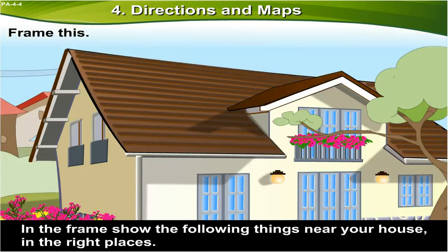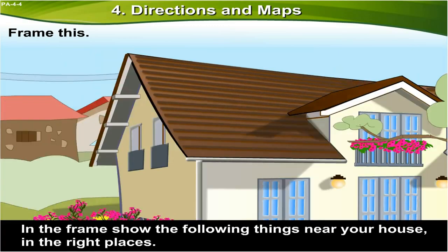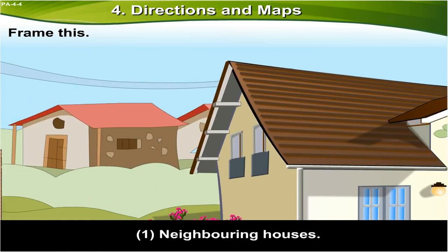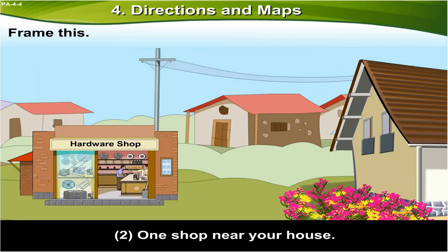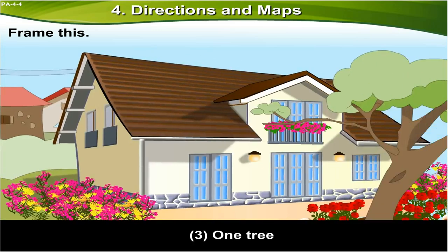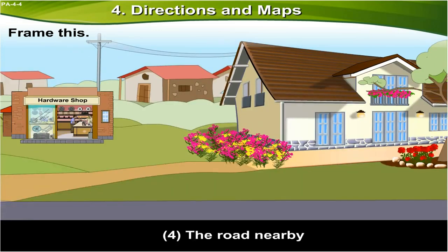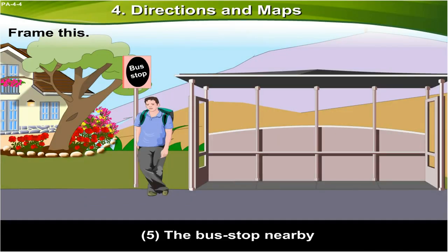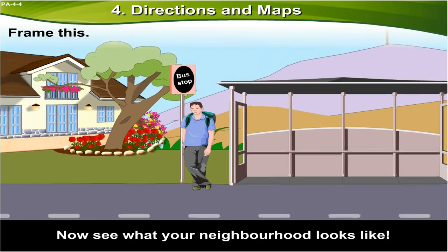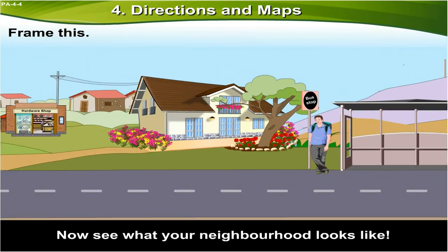In the frame, show the following things near your house in the right places. Now see what your neighborhood looks like.